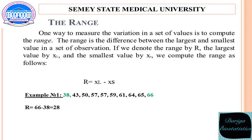One way to measure the variation in a set of values is to compute the range. The range is the difference between the largest and the smallest value in a set of observations. If we denote the range by R, the largest value by XL, and the smallest value by XS, we compute the range as follows. In the given example, the range is 28.